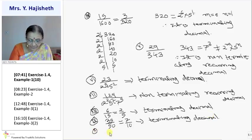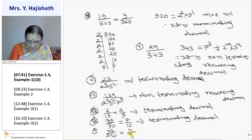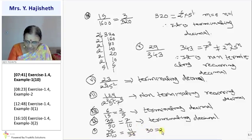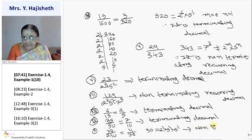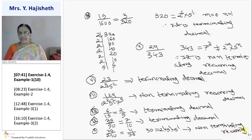The 10th sum is 77 by 210. Let me reduce it — 7 is a common factor in both numerator and denominator, giving 11 by 30. So 30 can be written as 2 raise to 1 into 3 raise to 1 into 5 raise to 1. It is not in the form of 2 raise to m into 5 raise to n, so it is non-terminating recurring decimal.